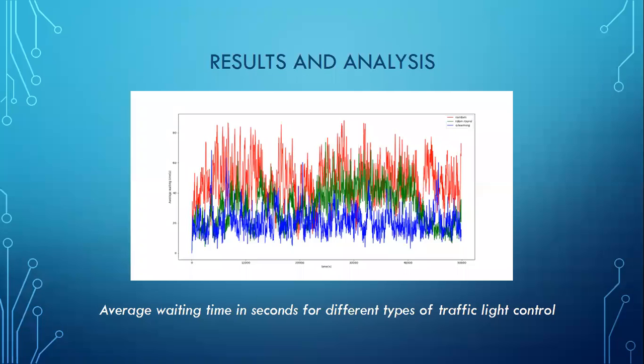These are some results and analysis. As you can see here, this is average waiting time in seconds for different types of traffic light control. Random method is shown as red, round robin is shown green, and our method is shown with blue color. As you can see here, our method has the lowest average waiting time.